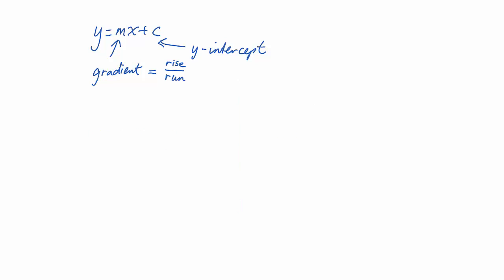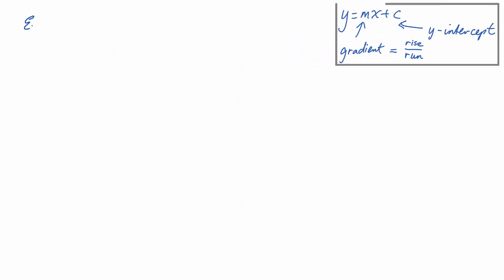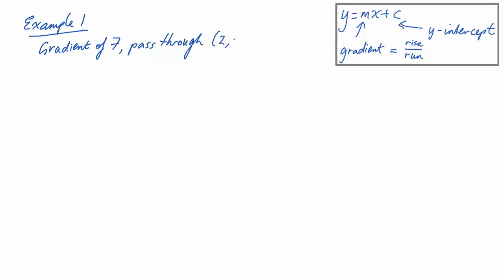Let's see how this strategy works with an example. Before we come to the case where we've got two points and want to find a line, let's say we've already been told the gradient of the line and we just want to make it go through a point. The example we'll consider is if we have a gradient of 7 and we want the line to pass through (2, 8).